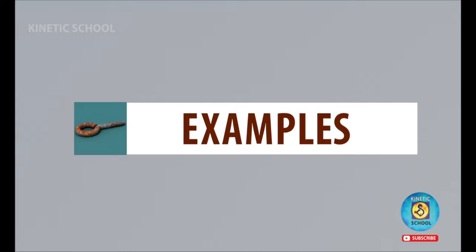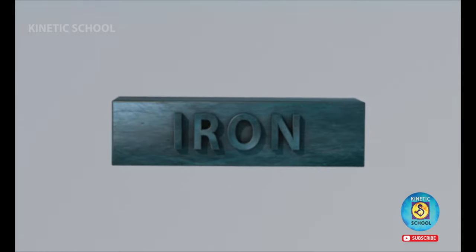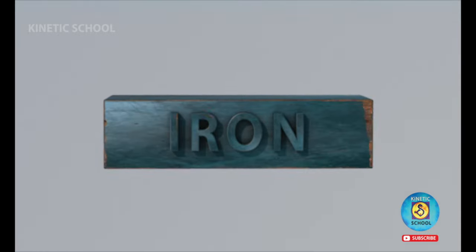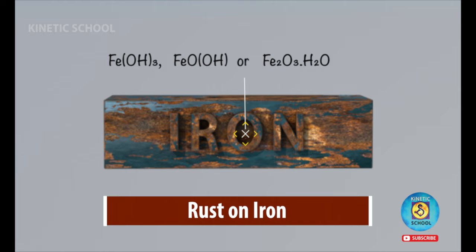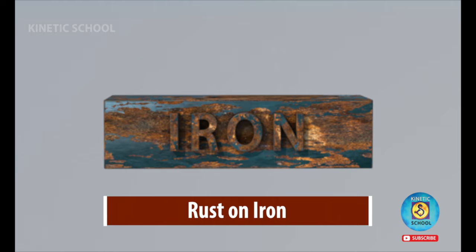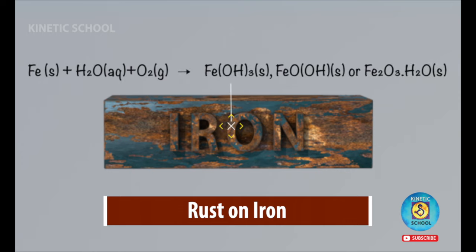Examples are rust on iron. Rusting of iron consists of the formation of hydrated oxide. When iron reacts with the environment in presence of moisture, it forms hydrated iron oxide.